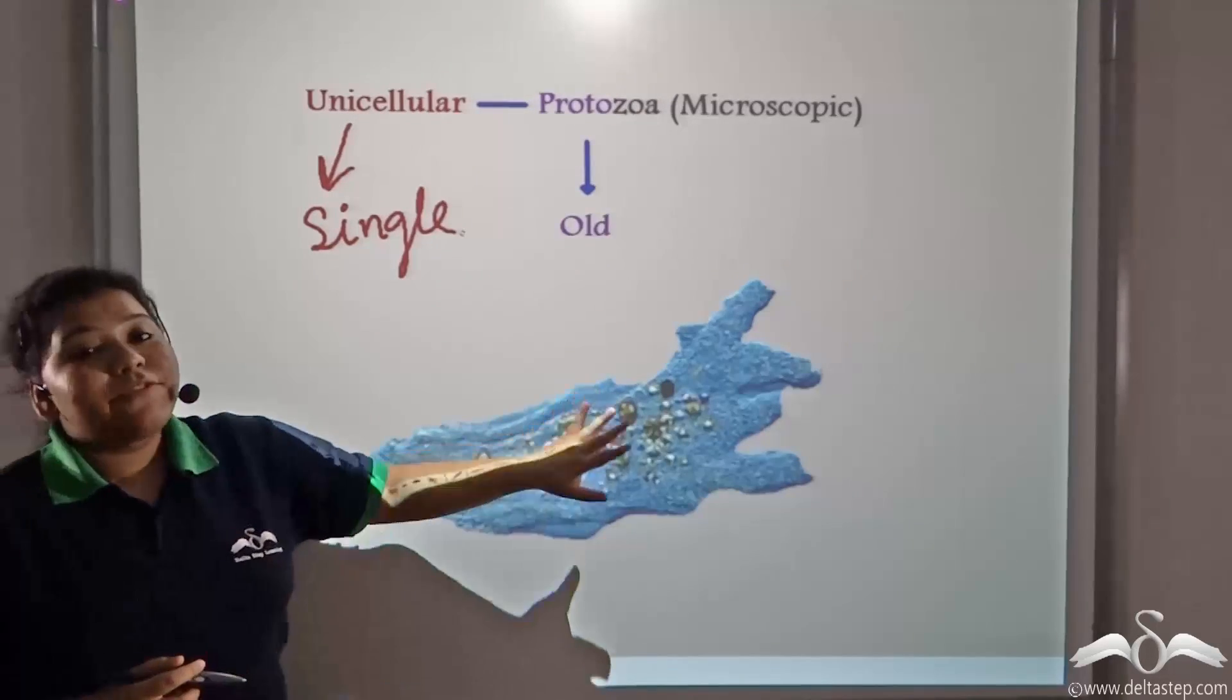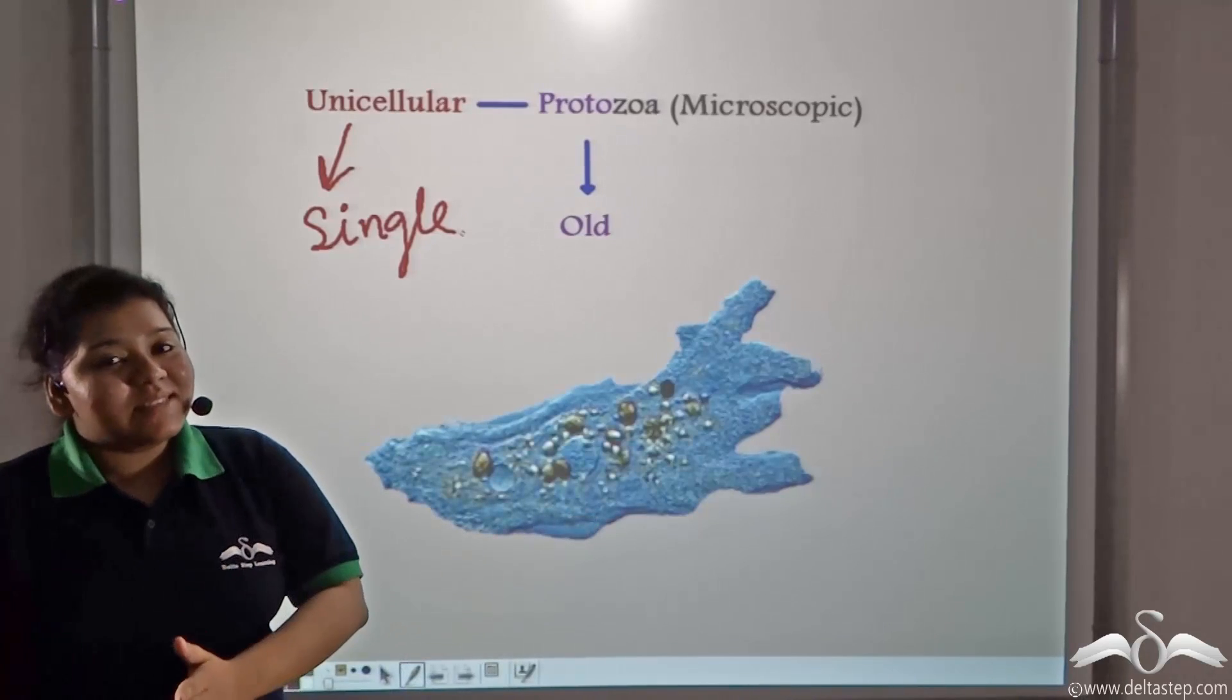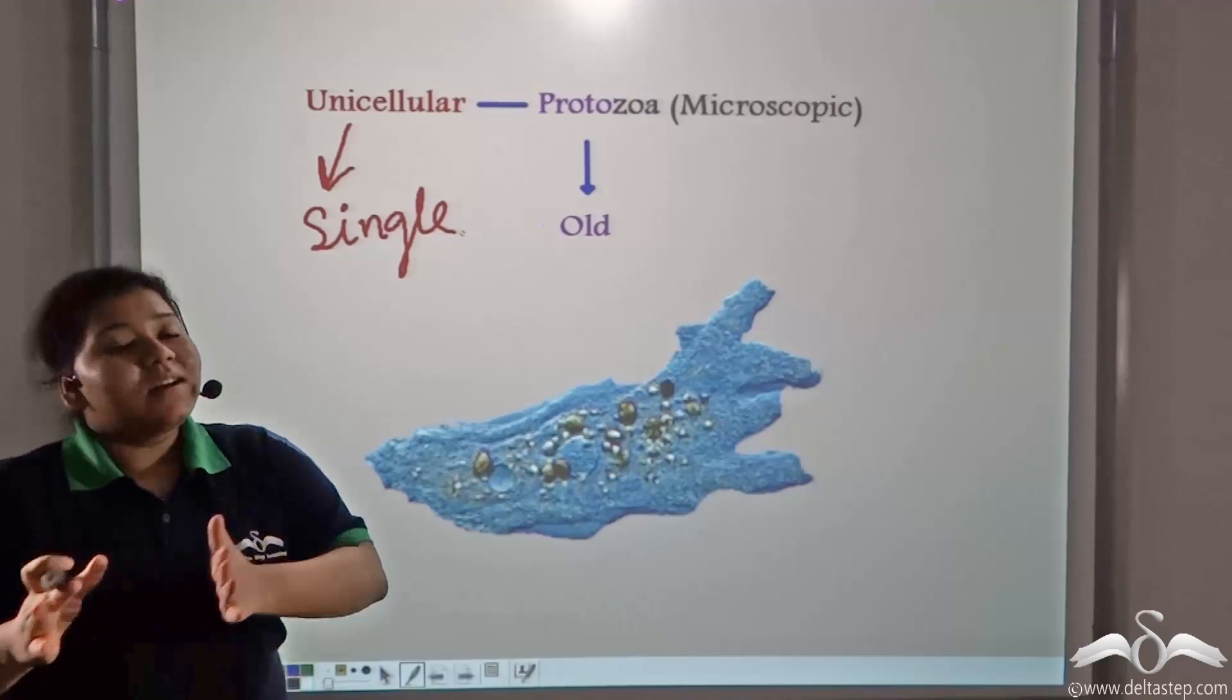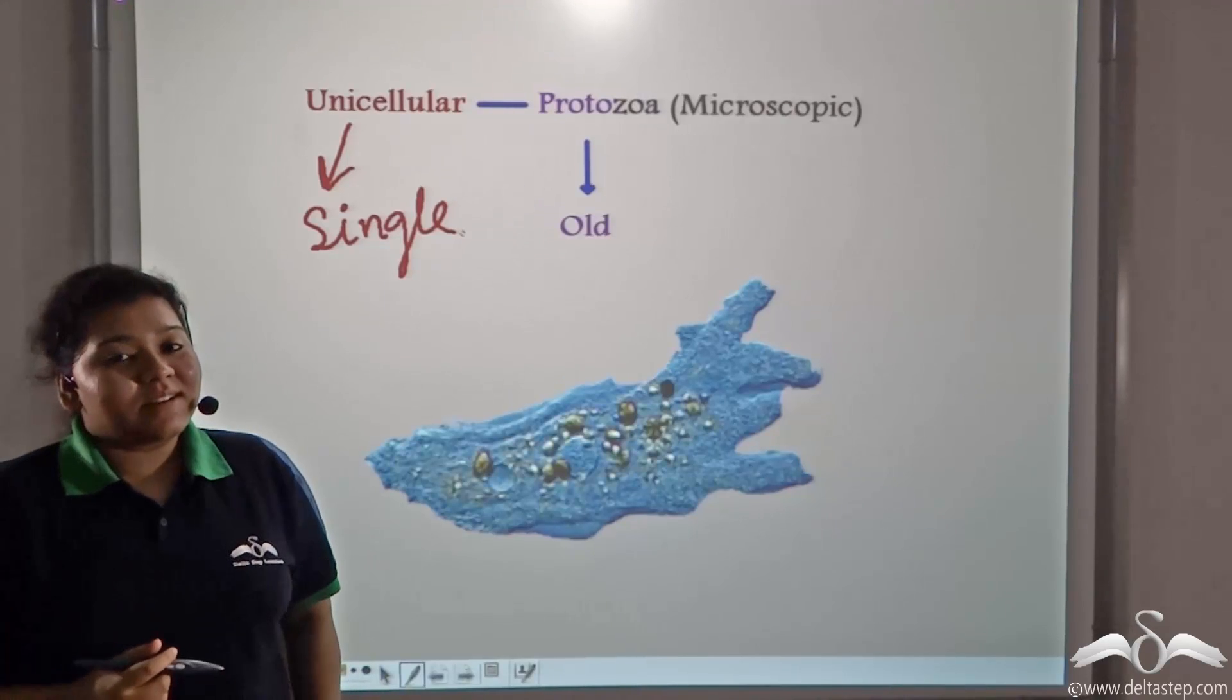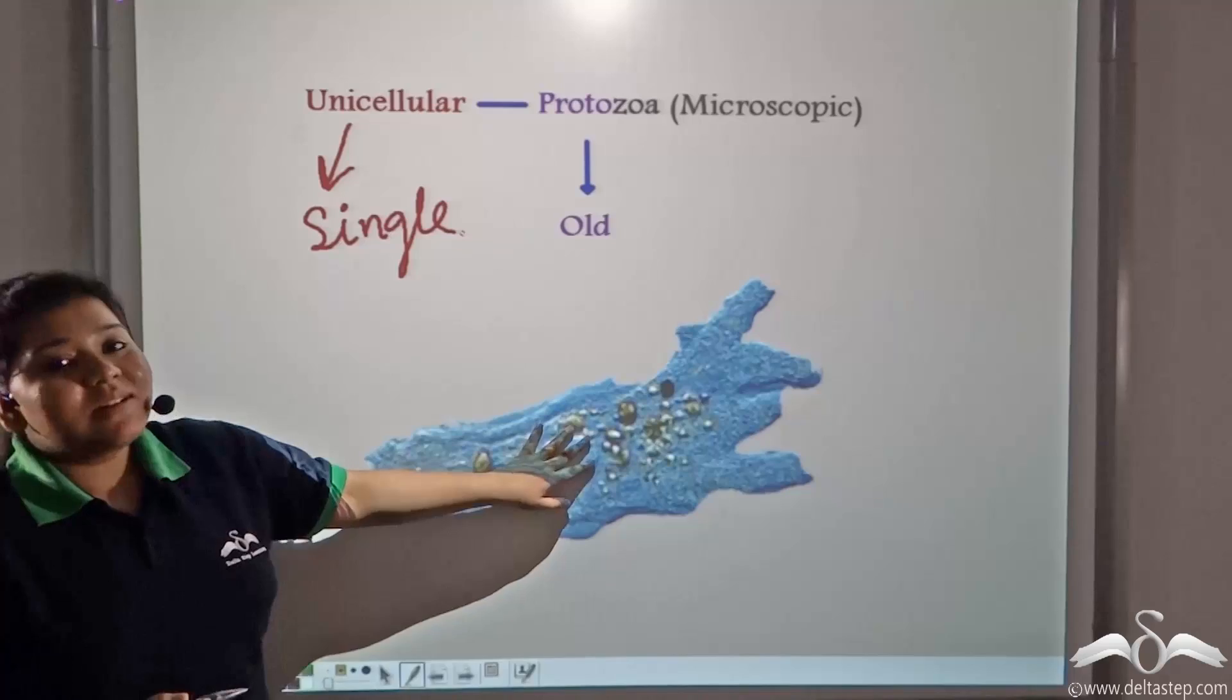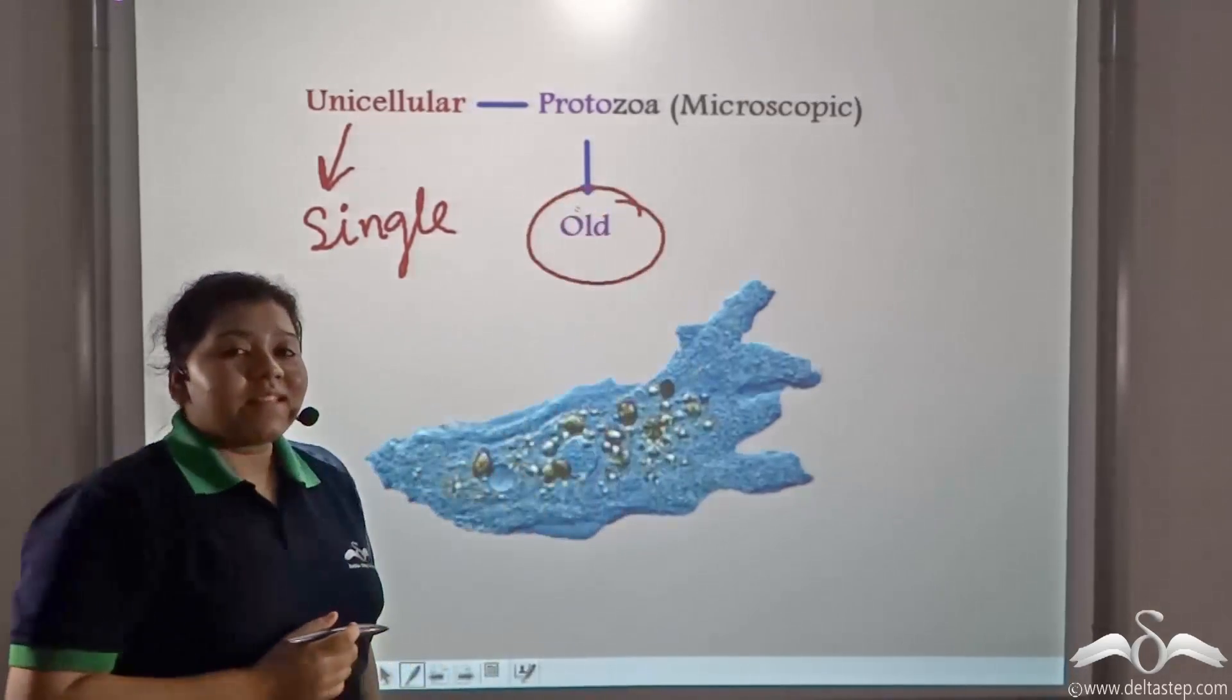Now, if you compare this unicellular organism with an animal cell, then cell structure wise, they are almost similar. That is why it is thought that animals have evolved from this old form of cells.